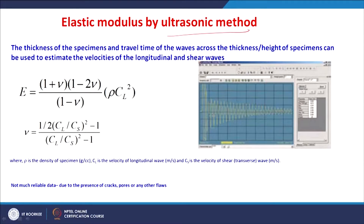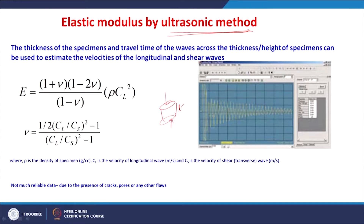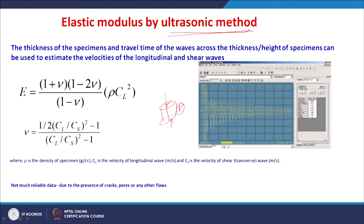Another method for measuring elastic modulus for ceramic materials is by ultrasonic method. A specimen is taken and ultrasonic waves are sent from one side to the other side. Knowing the specimen thickness, you note down the time required for the wave to travel to the other end and come back. Using an oscilloscope, you determine the time, and knowing the thickness, you get the velocity. You measure the velocity of longitudinal and shear waves. The thickness and travel time are used to estimate velocities, which together with the Poisson's ratio give the elastic modulus.